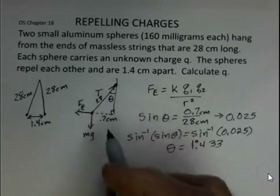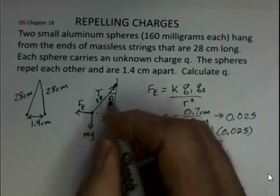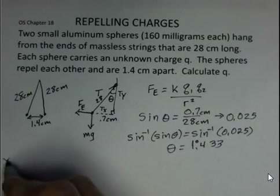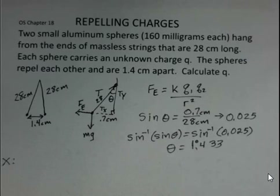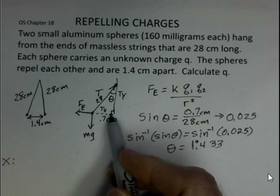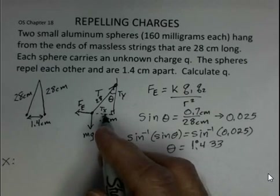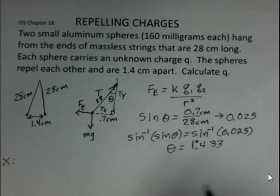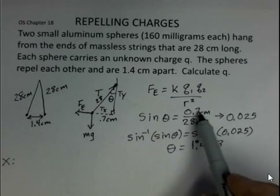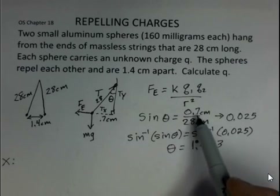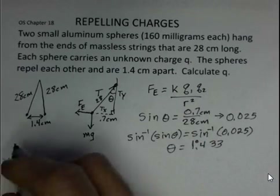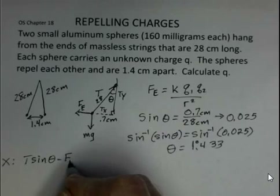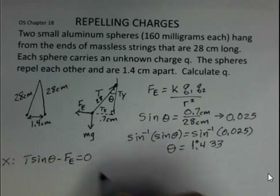The tension is going to have a y component and an x component — T sub y and T sub x. Let's write out the forces in the x direction. To the right, we have the x component of the tension. We find T sub x using the sine function: sine of theta equals T sub x over T, so T sub x equals T sine theta. The electrical force Fe goes to the left, so that's a negative force, and the sum equals zero.